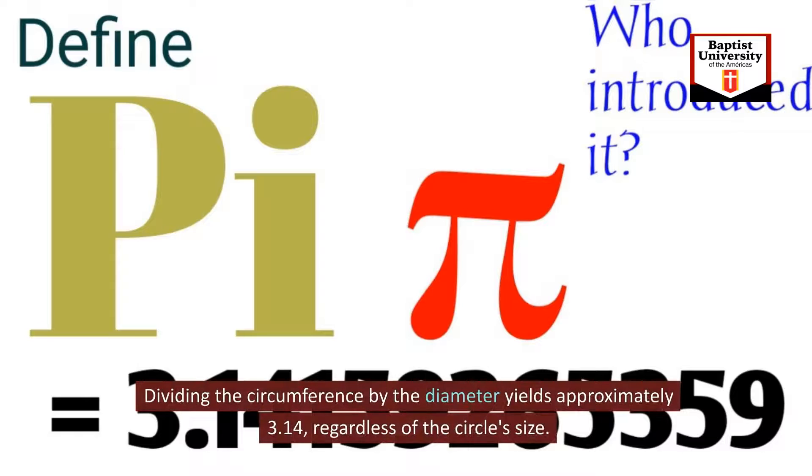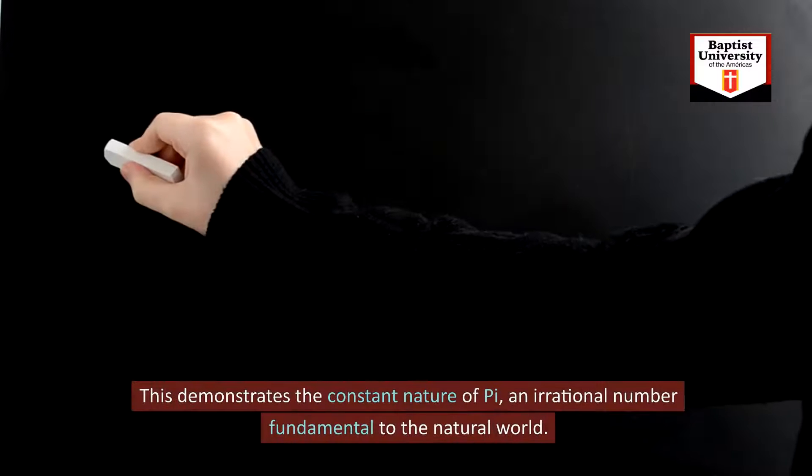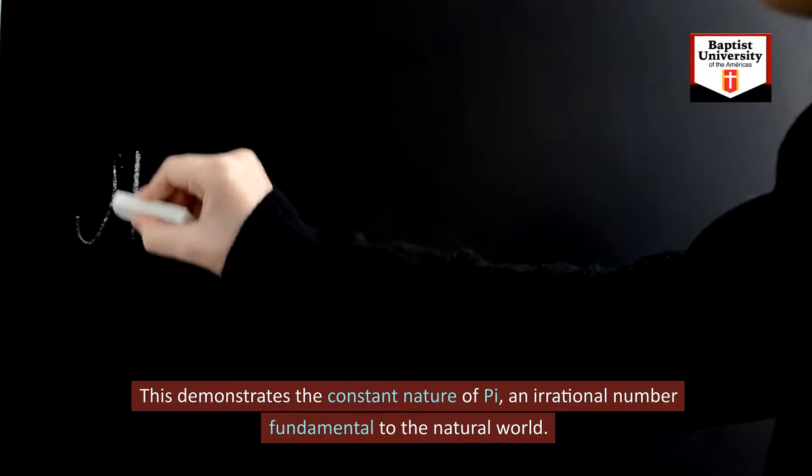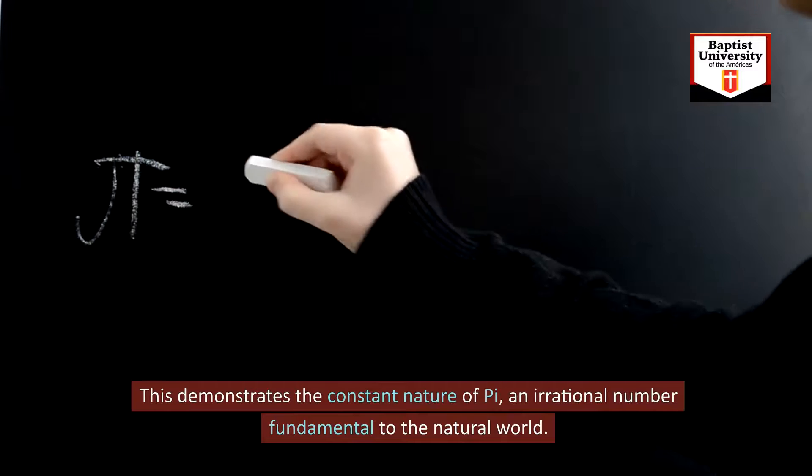Dividing the circumference by the diameter yields approximately 3.14, regardless of the circle's size. This demonstrates the constant nature of pi, an irrational number fundamental to the natural world.